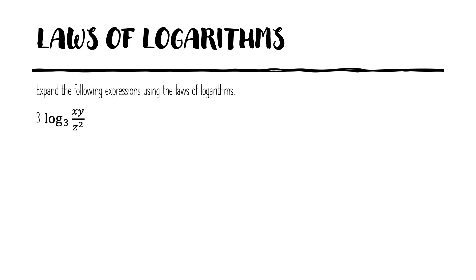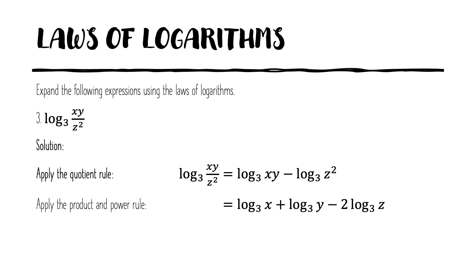Let's look at our third example, the log of x times y divided by z squared base 3. First we apply the quotient rule. We can write it as log of x times y base 3 minus the log of z squared base 3. Then we apply the product and power rule simultaneously, so we will get log of x base 3 plus log of y base 3 minus 2 times log of z base 3.